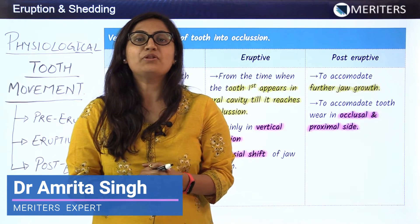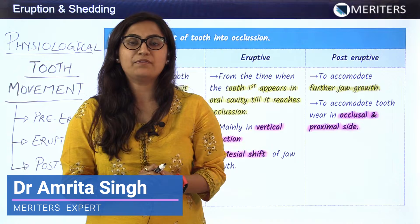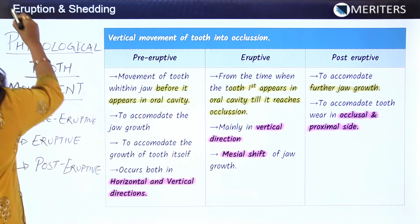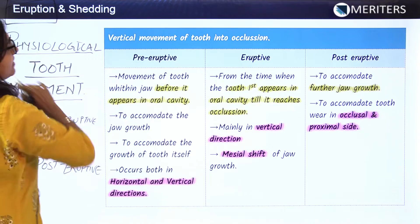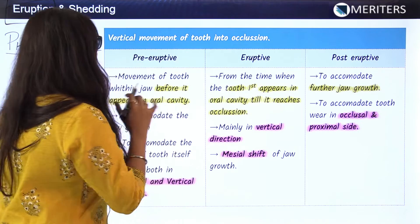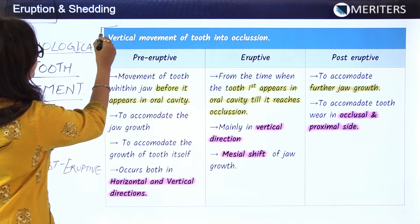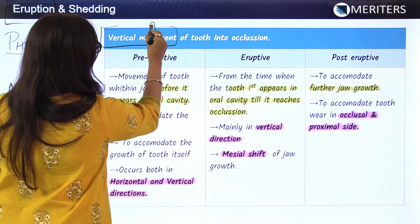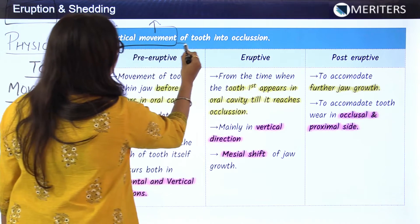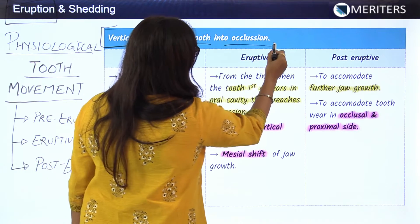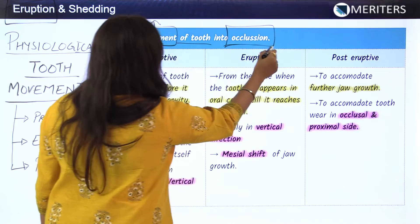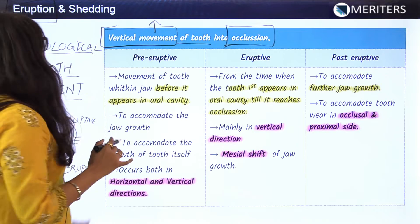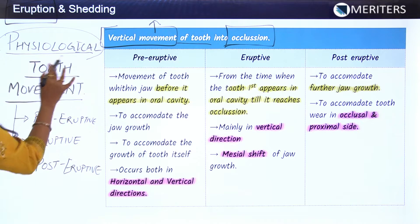Hello everyone. Today we are going to discuss another important topic for the NEET exams, that is eruption and shedding of the teeth. Let's begin with the process of eruption. Eruption of teeth is basically referred to as the vertical movement of the teeth — the occlusal movement going upward until the tooth comes into the position of occlusion. This is the definition for eruption of teeth.